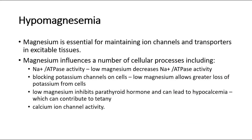Next we look at hypomagnesemia, which is low magnesium levels in the body. Magnesium is essential for maintaining ion channels and transporters in excitable tissues. Magnesium influences a number of cellular processes including sodium ATPase activity and blocking potassium channels on cells. Low magnesium allows greater loss of potassium from cells. Low magnesium also inhibits parathyroid hormone and can lead to hypocalcemia, which can contribute to tetany, and it affects calcium ion channel activity — all causing Trousseau's sign to occur.